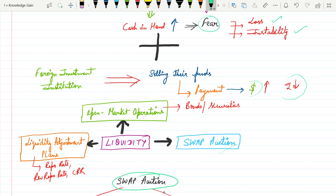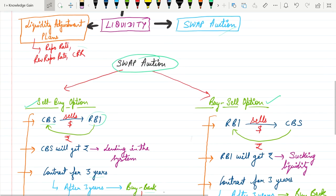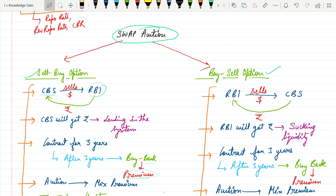Now what is SWAP option? There are basically two types of SWAP options. Recently government announced to adopt SELL BUY option to provide liquidity in the market. What is SELL BUY option? Basically commercial banks sell some quantity of dollars to RBI and in return they get rupee currency. The commercial banks will use the same Indian currency for lending in the system.